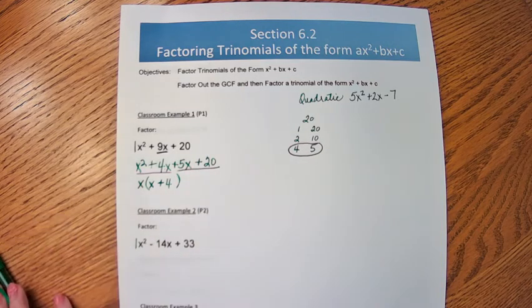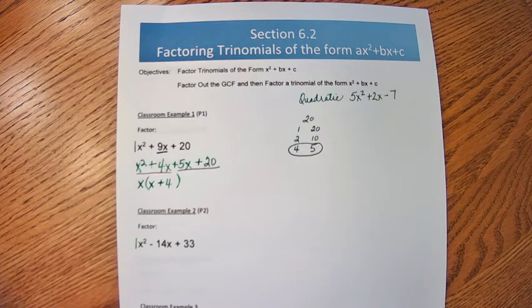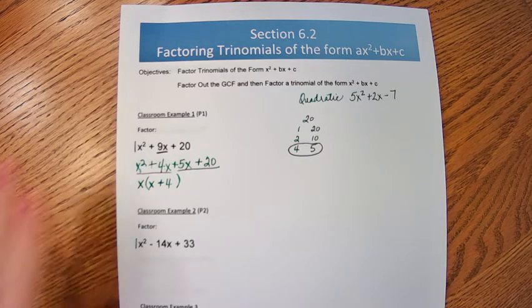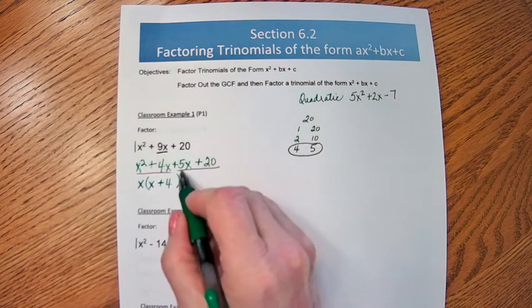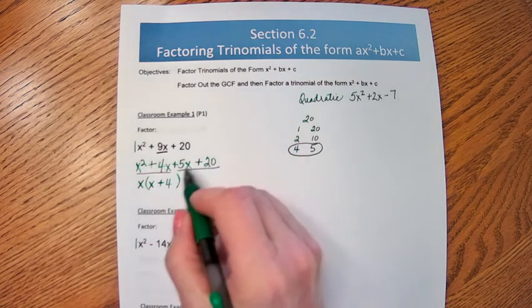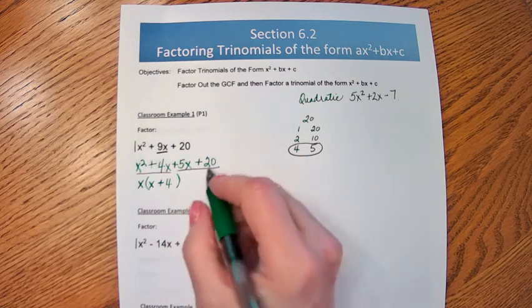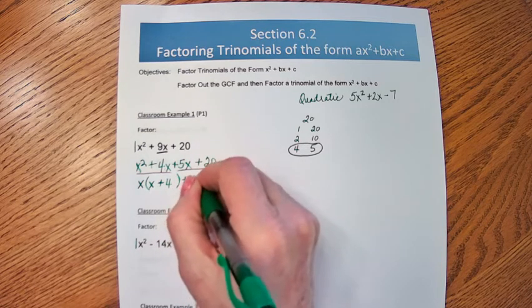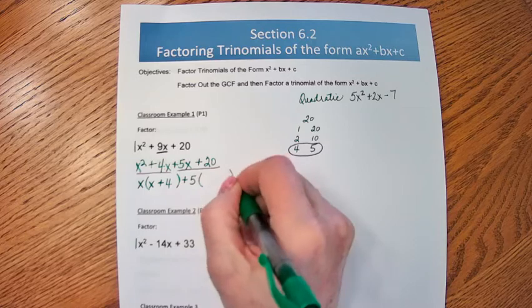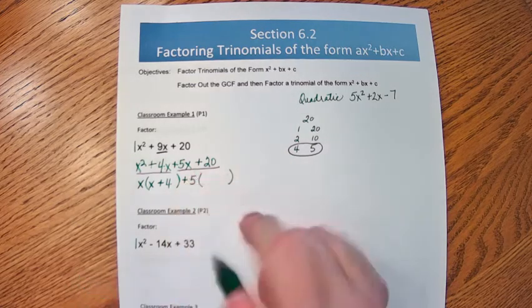If I don't get an x + 4, I've done something wrong. So now I'm going to these two terms. And what's the GCF of 5x and 20? What number goes evenly into 5x and 20? And that would be a positive 5.